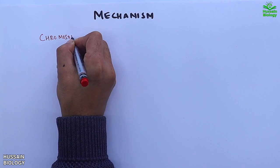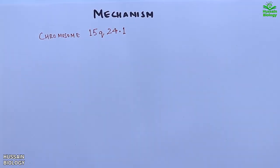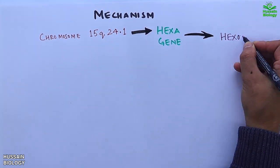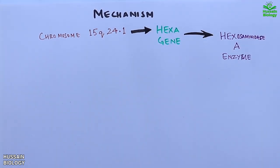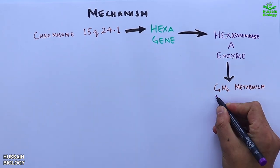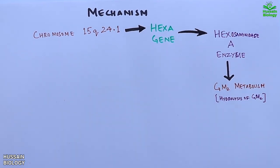Now let's see the mechanism of Tay-Sachs disease and how we get the disease at the genetic level. The gene location is at chromosome 15q24.1. The gene on that location is the HEXA gene which codes for hexosaminidase A enzyme, the alpha subunit of hexosaminidase enzyme. This enzyme aids in GM2 metabolism where it drives the hydrolysis of GM2 gangliosides to GM3. This forms the normal process.